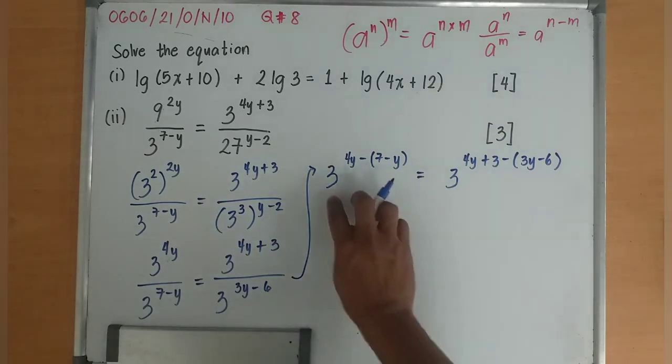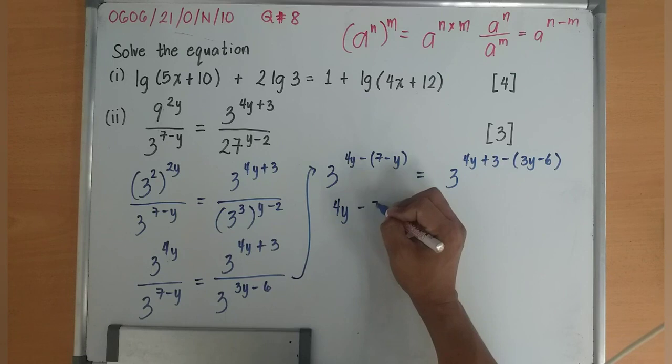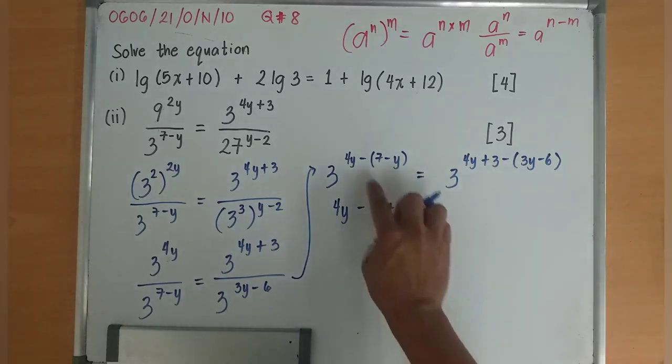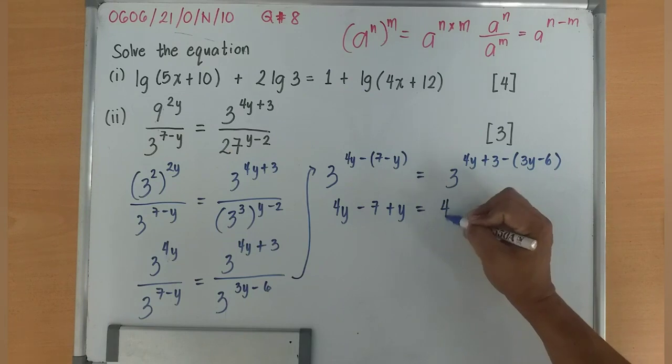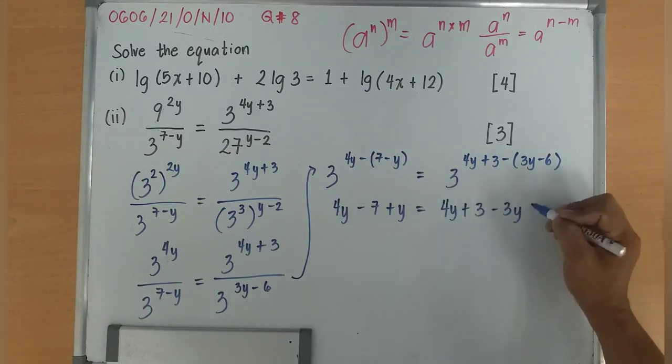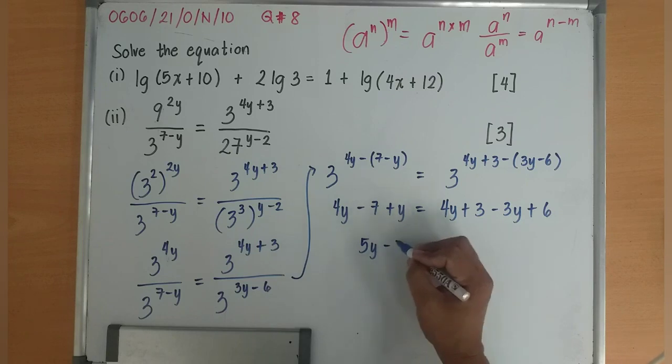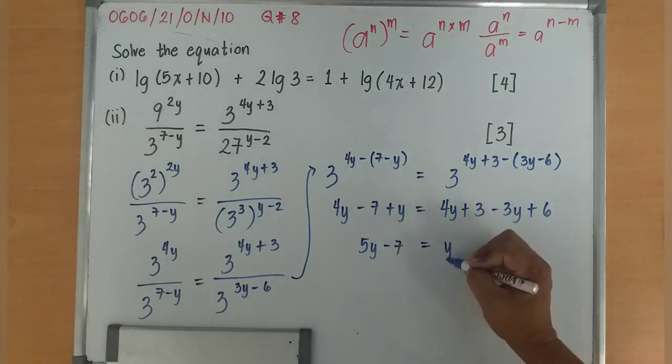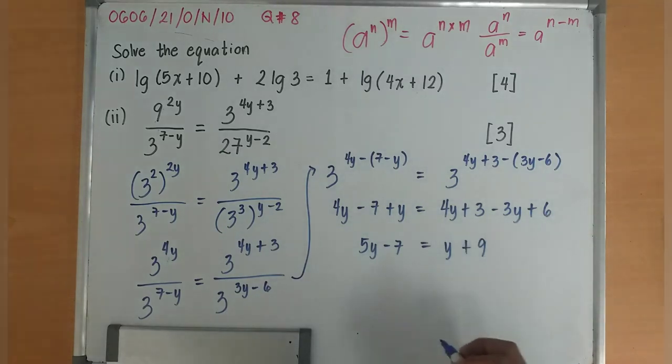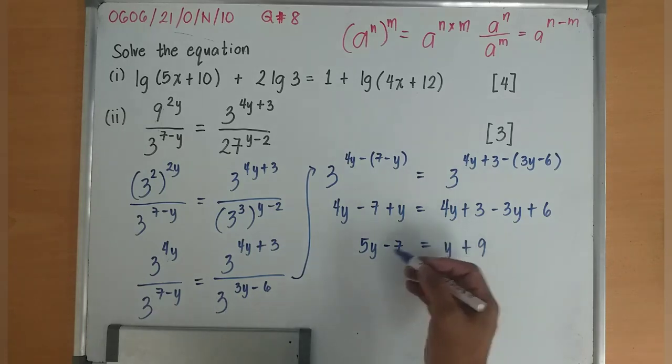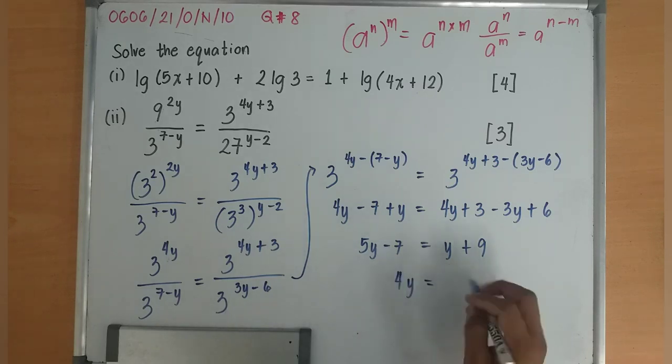We can now get rid of the indices. I'll have 4y minus 7 plus y equals 4y plus 3 minus 3y plus 6. 5y minus 7 equals y plus 9. Subtract both sides by y, I'll have 4y. Add both sides by 7, I'll have 16. So y equals 4.